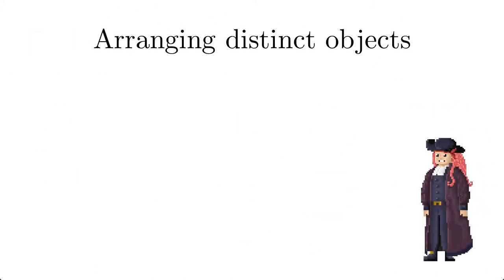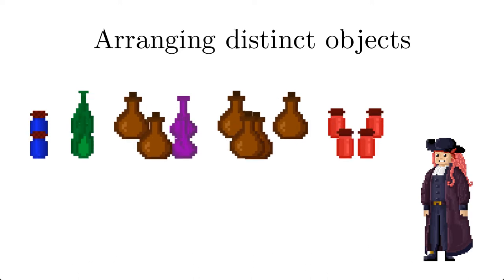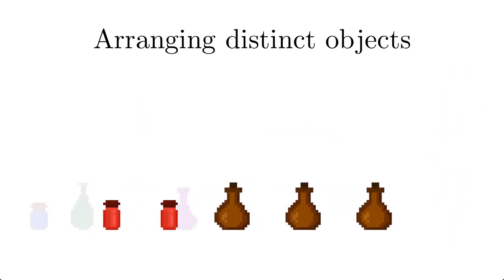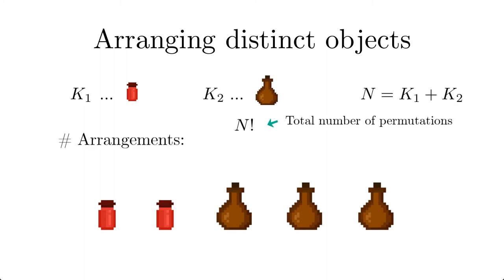Captain Bayes was wondering how the number of arrangements changes if one adds additional copies of jars with the same color. The difference to the previous problem is that now some jars are indistinguishable and exchanging them results in the same arrangement. Let's first consider objects with two colors only. So for example some of them, K sub 1, having red color and others, K sub 2, are brown. Now the total number of permutations of all objects, which we have derived before, must be divided by those permutations which lead to exactly the same arrangement, which means we have to divide by the possible permutations of the objects with the same color.